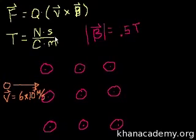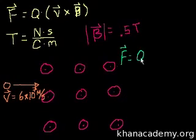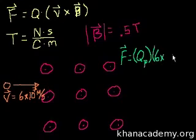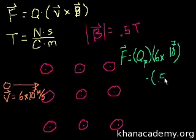Let's figure out the magnitude first. The charge on a proton — we don't know it right now, but a calculator has it stored. So the magnitude of the force on the particle equals the charge of the proton q_p, times the magnitude of the velocity, 6 times 10 to the 7th meters per second, times the magnitude of the magnetic field, 0.5 Teslas, times the sine of the angle between them.